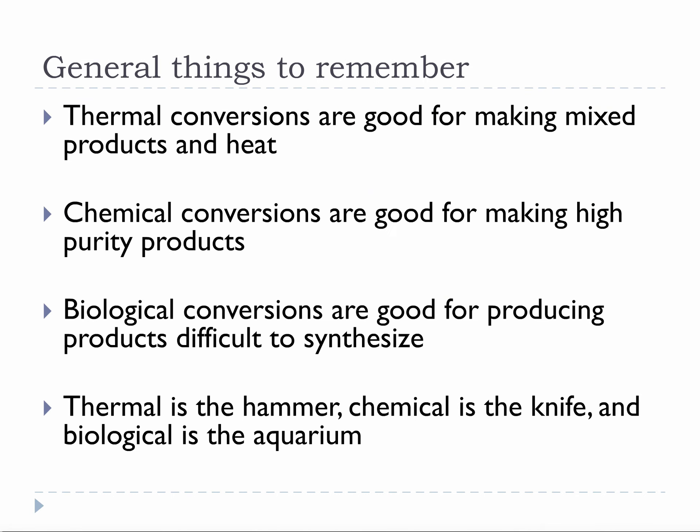There are a few general things to remember. Thermal conversions are good for making mixed products and heat. Chemical conversions are good for making high purity products. And biological conversions are good for producing products that are difficult to synthesize. Remember: thermal is the hammer, chemical is the knife, and biological is the aquarium.